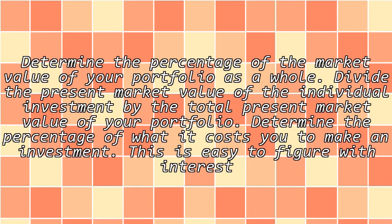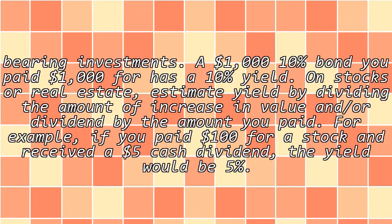Determine the percentage of the market value of your portfolio as a whole by dividing the present market value of the individual investment by the total present market value of your portfolio. Then determine the percentage of what it costs you to make an investment. This is easy to figure with interest-bearing investments — a 10% bond you paid par has a 10% yield. On stocks or real estate, estimate yield by dividing the amount of increase in value and/or dividend by the amount you paid.